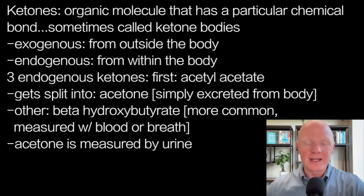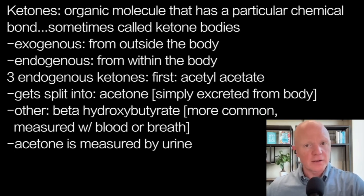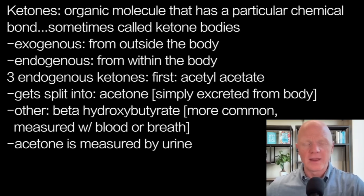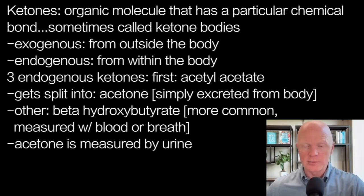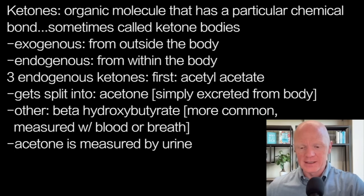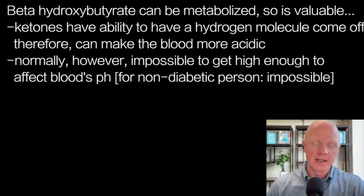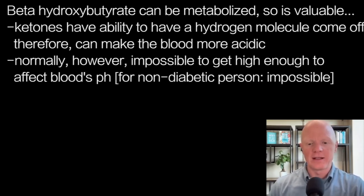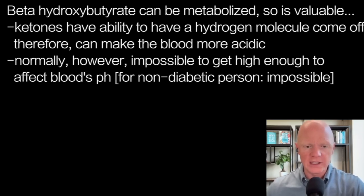Beta-hydroxybutyrate is the most common, and that's the one that is typically measured. When you're doing a finger stick and measuring your ketones with a ketone meter, that is what you're measuring — beta-hydroxybutyrate. However, when you are measuring ketone levels on a urine stick, you're measuring the acetone, because the acetone has to be excreted. In contrast, beta-hydroxybutyrate can be metabolized, and this is why it is valuable.